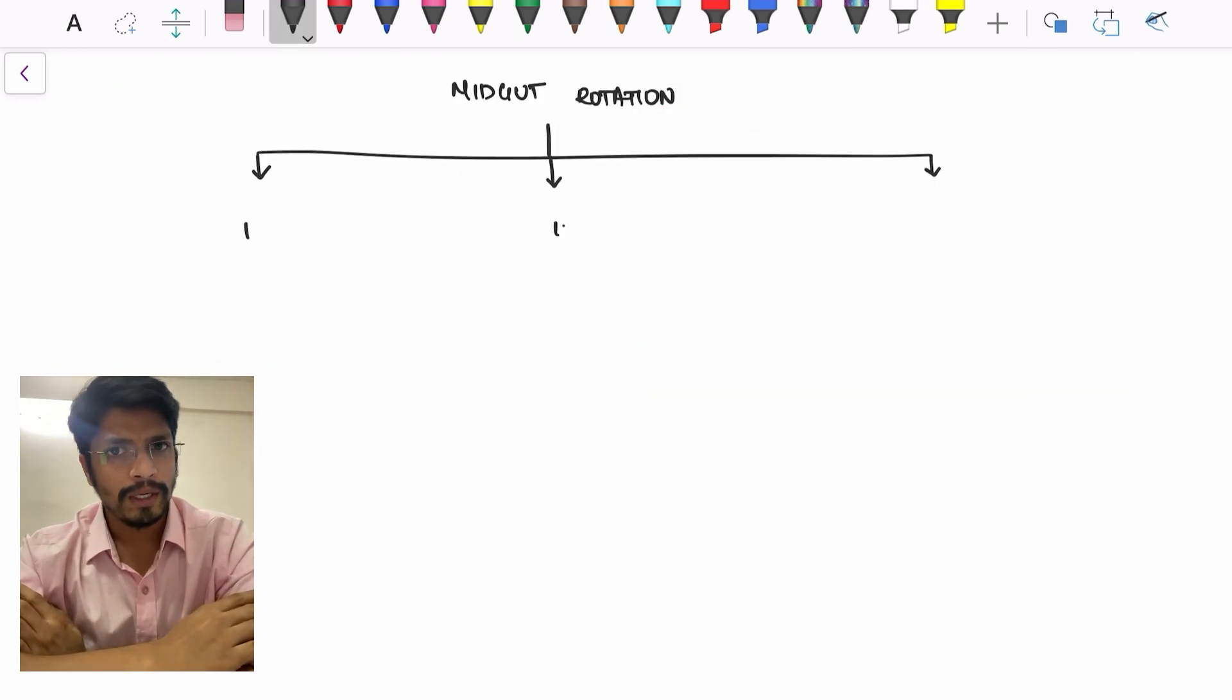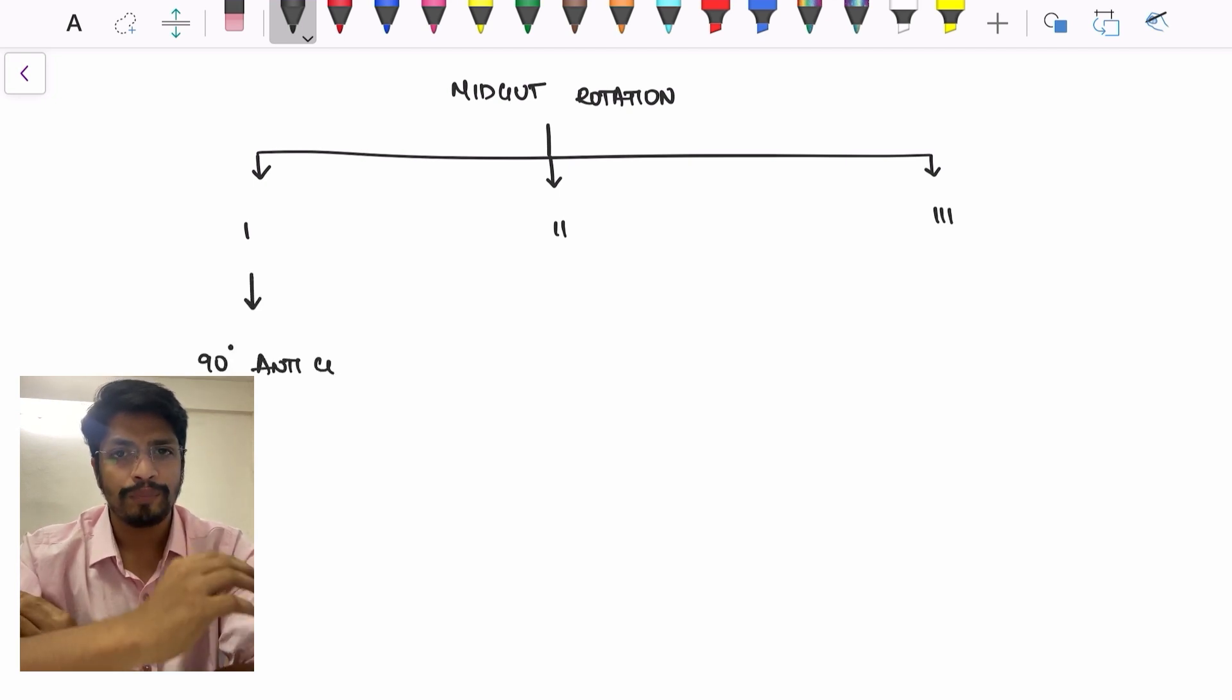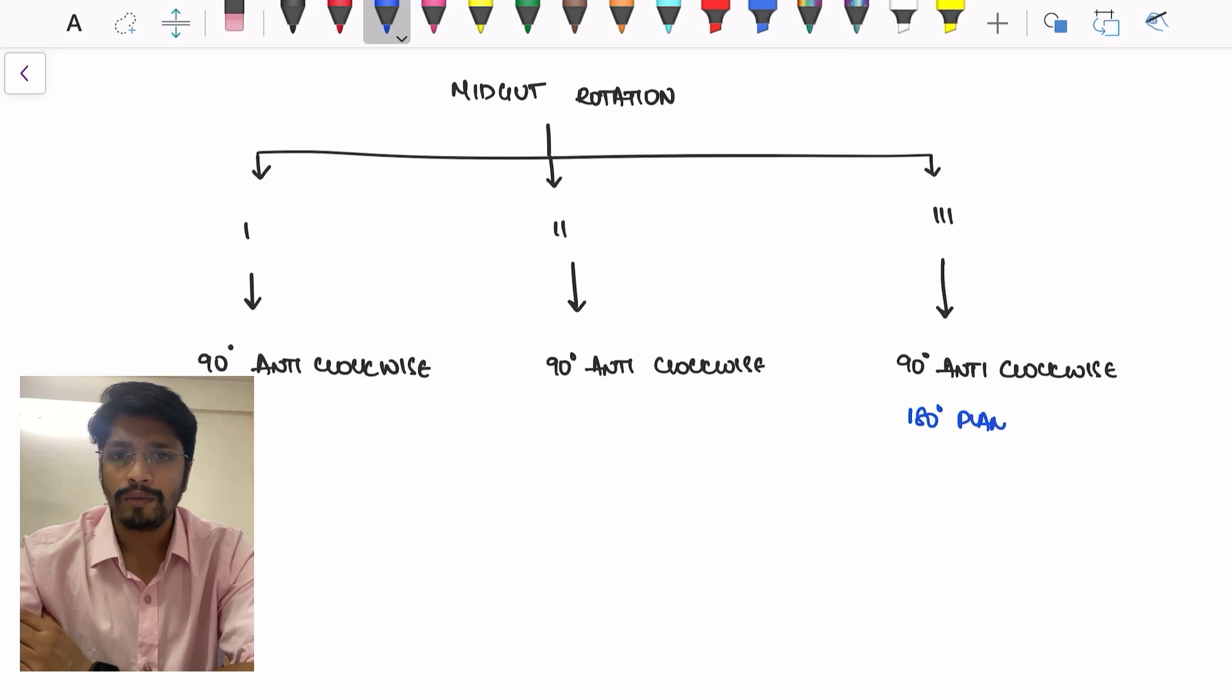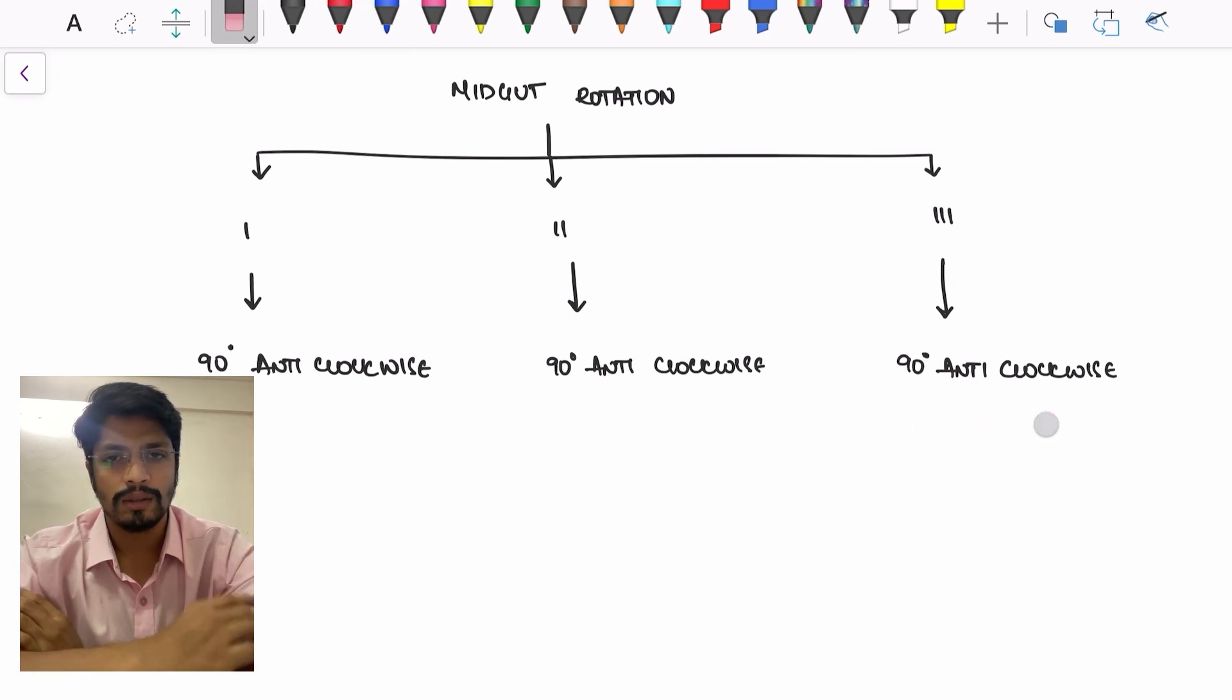As we already know, midgut rotation is divided into three phases. Each phase is again having its own importance. In the first phase, it is 90 degrees anticlockwise. Second phase, again 90 degrees anticlockwise. Third also 90 degrees anticlockwise. But there is a difference between the first two and the last 90 degrees.